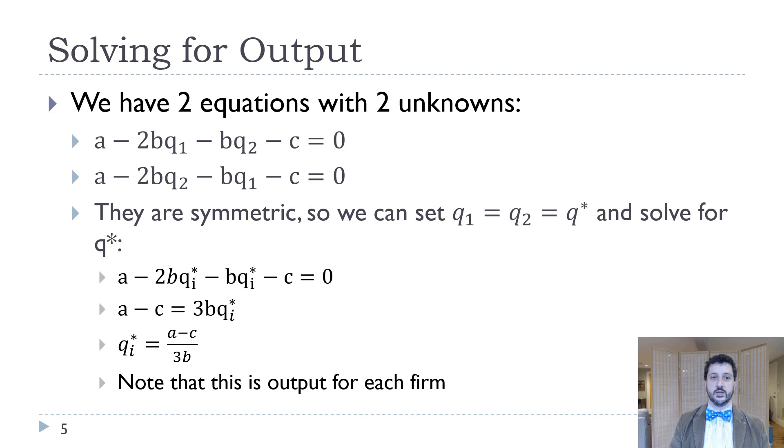Now, the nice thing here is that we have symmetry, and symmetry is often our best friend in terms of solving these things quickly. So because we have symmetry, we know that Q1 is going to equal Q2. They're going to produce the same amount. We can call that Q star. And then we can just plug that into either equation. Those equations just become the same thing. And so we get A minus 2BQ star minus BQ star minus C equals zero. Or A minus C equals 3BQ star. Or Q star equals A minus C over 3B.